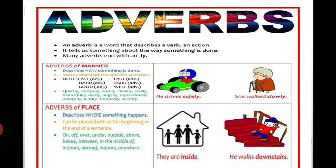We had read about adverb of manner and adverb of place. Adverb of manner describes how something is done — koi cheez kaise ho rahi hai. For example: He drives safely, she walks slowly. Adverb of place describes where something happens — koi cheez kahan pe ho rahi hai.